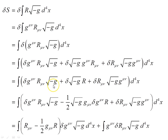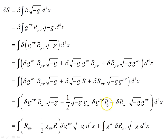Collecting those terms and moving things around for convenience, we obtain this expression. From a previous video, we've seen the variation of the metric determinant: it's minus one-half times the square root of the metric determinant, times g_μν, times the variation of the inverse metric, times the Ricci scalar. From here we can factorize out the variation of the inverse metric, collecting all these terms together. It then remains to investigate the final term involving the variation of the Ricci tensor.